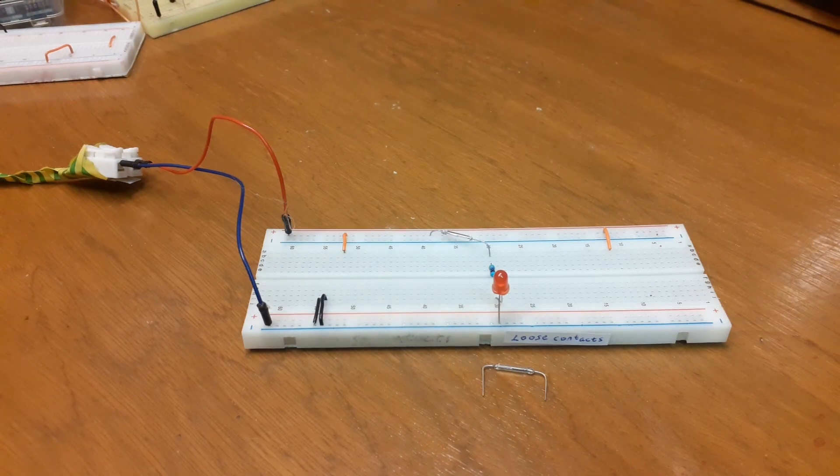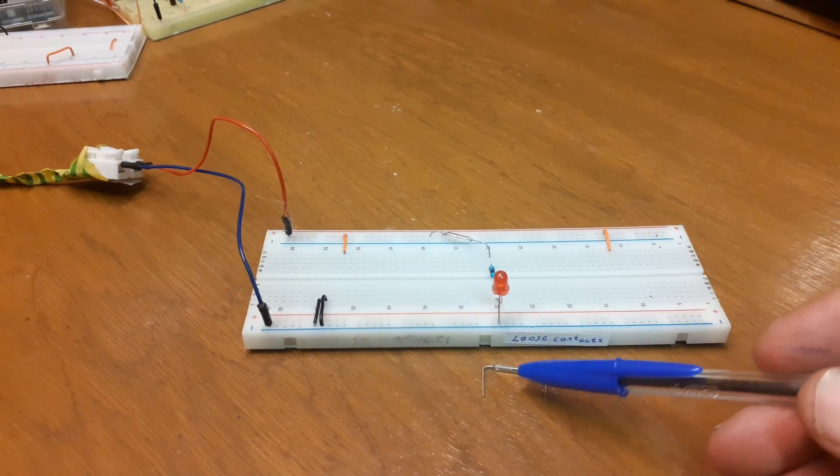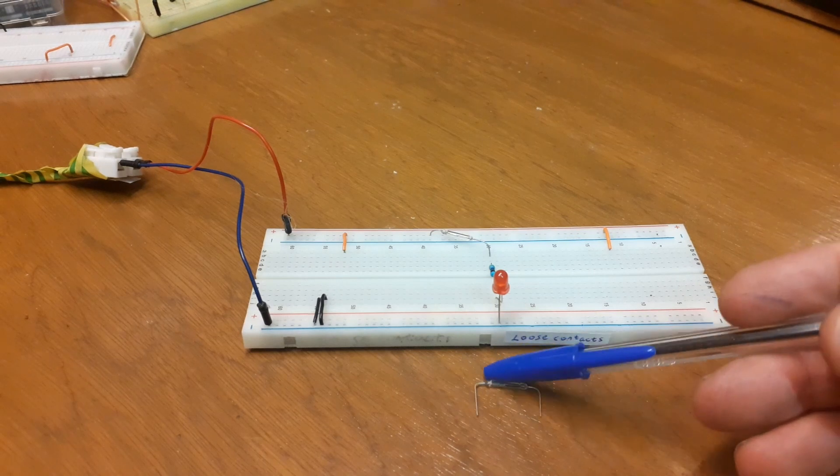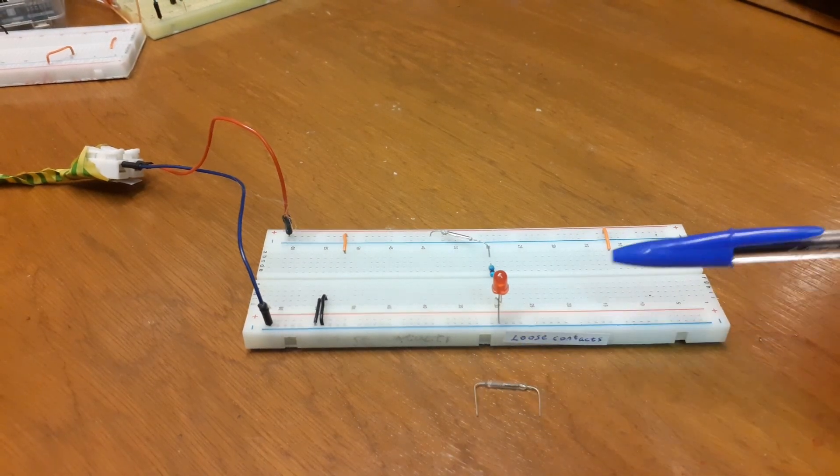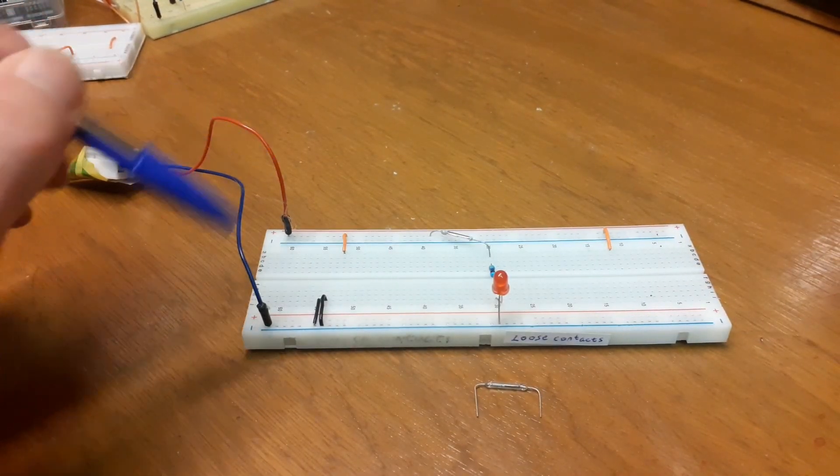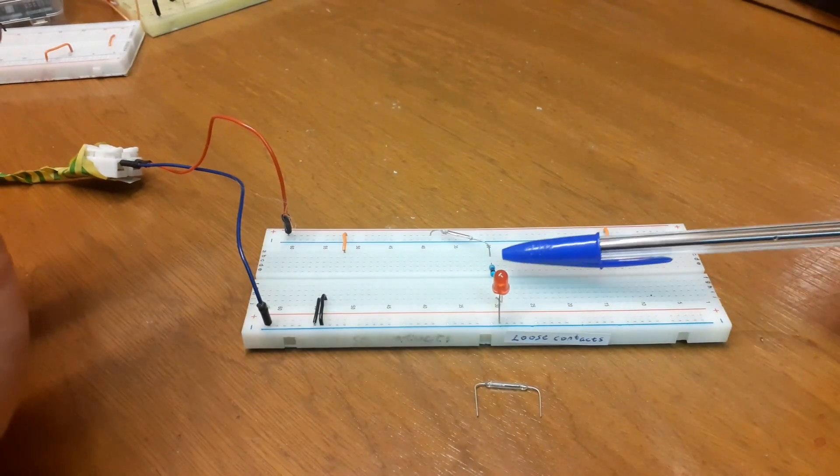Here we use the reed switch as a simple on-off reed switch just to show you. It's activated by magnet, brings two contacts together. We've got a 5 volt input here, LED.